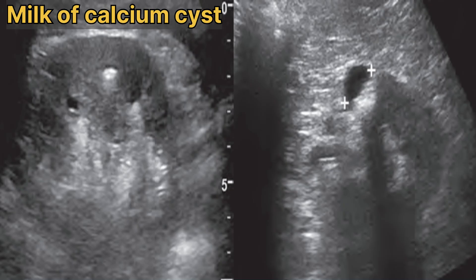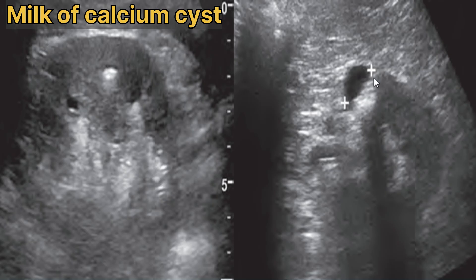Now we will discuss milk of calcium cysts. Crystalline material can accumulate in the cyst and produce shadowing echogenic material that may or may not layer in the dependent aspect of the lumen. A transverse view shows an echogenic lesion in the renal cortex — the cyst is too small to resolve any fluid, and only bright reflections from the crystals are seen. Another view shows a cystic structure with an anechoic lumen and highly echogenic crystalline material in its dependent aspect — this is the milk of calcium cyst.